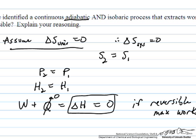So the best you can do is to get nothing out for this kind of case for an adiabatic and isobaric process. And so therefore, delta H, which is equal to the work,